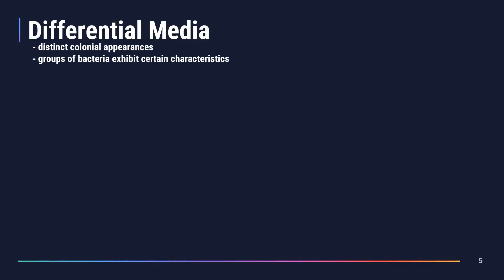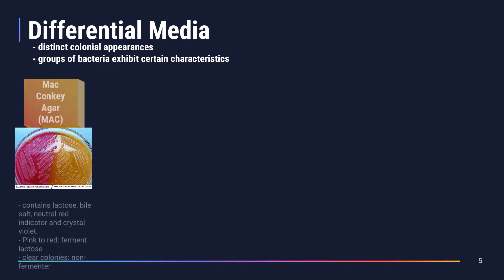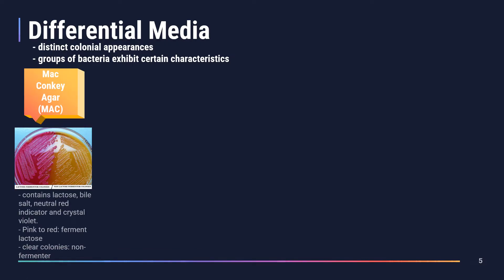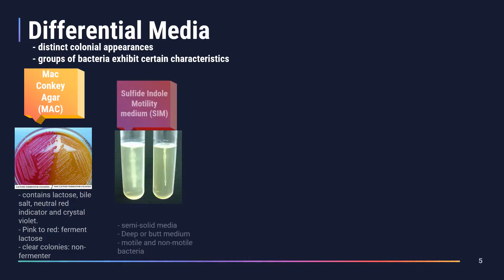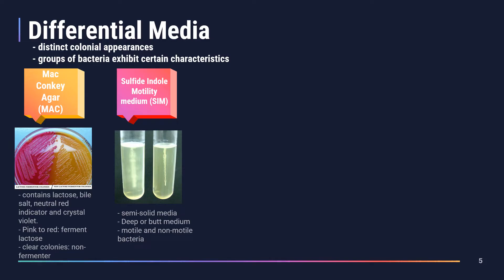The third type is the differential media, which differentiates organisms according to the appearance of their colonies on the culture medium. Groups of bacteria have certain characteristics that make them unique from others. One example is MacConkey agar (MAC), which differentiates organisms as fermenters or non-fermenters. It contains lactose, bile salts, neutral red indicator, and crystal violet. Lactose fermenters produce pink to red colonies, while non-fermenters appear clear.